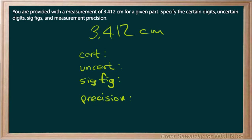So first of all, we know that in order to do a measurement properly, we have one uncertain digit. Okay, so that must be the 2. It's our last digit. So we can mark that as our uncertain digit. And that means that everything else is a certain digit. So we can say the 3 is certain, the 4 is certain, and the 1 is certain.